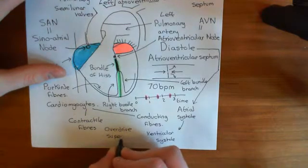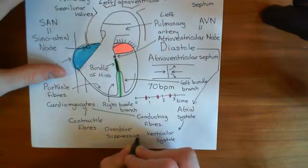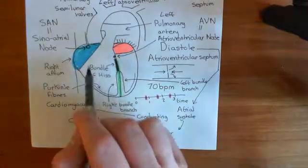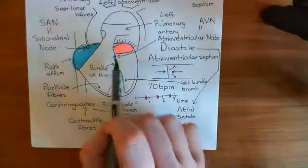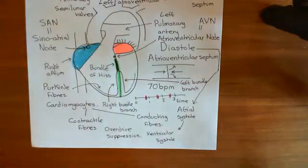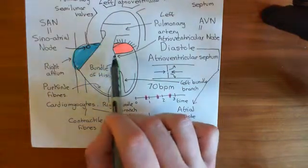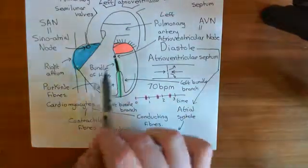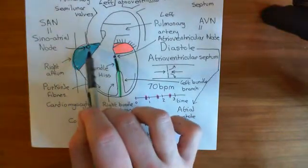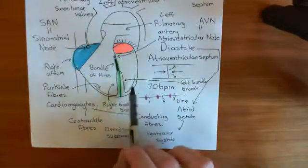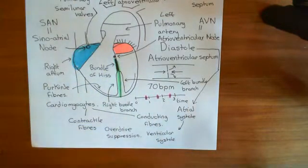If the sinoatrial node stops working, the AV node will take over the beat of the heart, and the heart will beat slower — around 50 times per minute — because the AV node generates action potentials more slowly. If both the SA node and AV node fail, the bundle of His takes over. The rate gets progressively slower down the pathway: roughly 70 for the SA node, 50 for the AV node, maybe 40 for the bundle of His, and 30 for the Purkinje fibres.